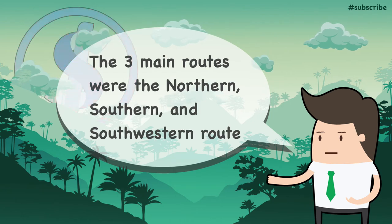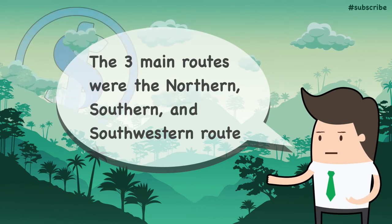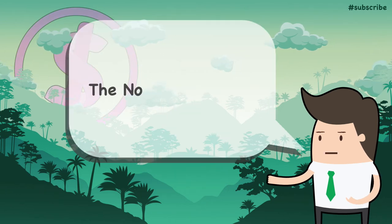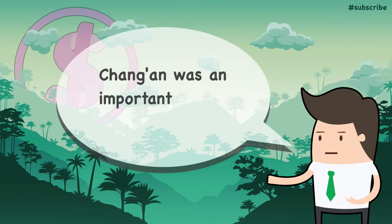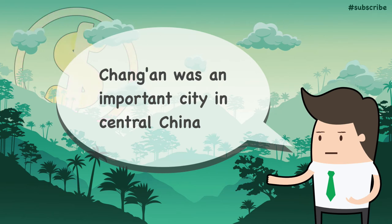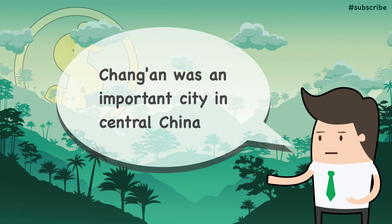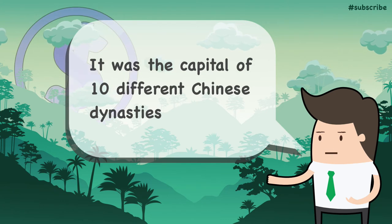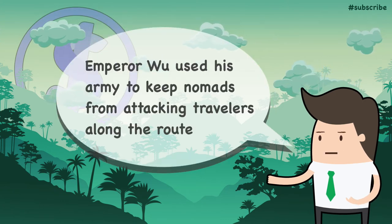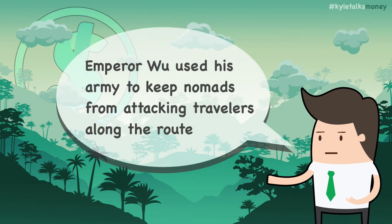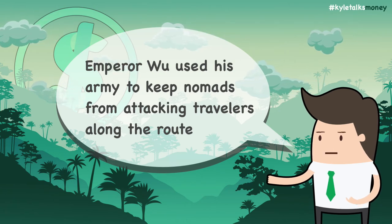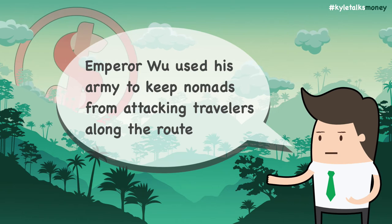The Silk Road consists of several routes. Among the overland routes, the dominating ones were the Northern Route, the Southern Route, and the Southwestern Route. The easternmost point of the Northern Route was Chang'an, an important city in central China that was the capital of more than 10 different Chinese dynasties. The Northern Route became popular around the first century BC when the Chinese Emperor Wu of Han, who reigned from 141 to 87 BC, used his army to keep nomadic tribes from attacking travelers within his sphere of influence.